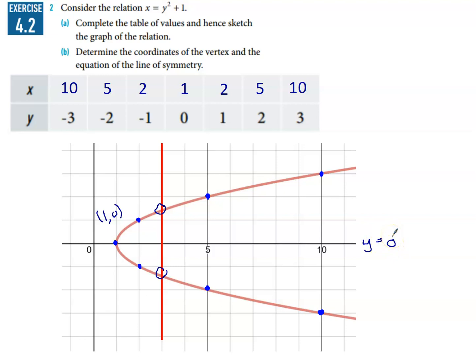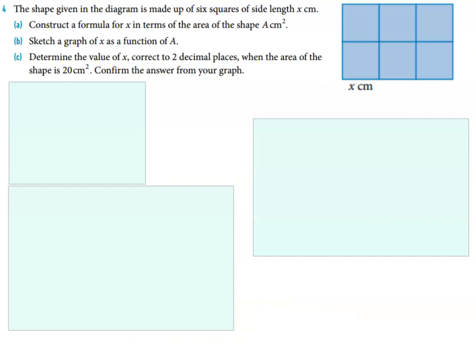Okay, here's a little bit of a challenging question, not too bad. So again, stop the video, read the question, have a go, and then check your answers. The shape given in the diagram is made up of six squares of side length x centimeters.